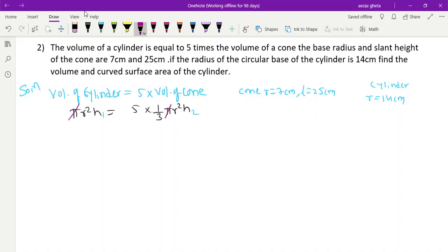r² of cylinder is 14 × 14, height of cylinder we don't know, equals 5/3 × radius of cone 7 × 7 × height of cone. Height of cone is not given but slant height is given, so we can find height.